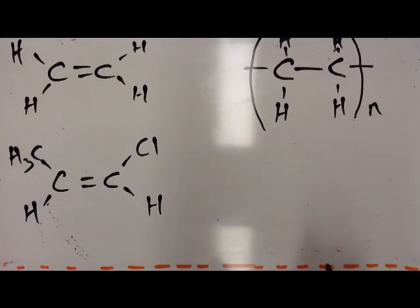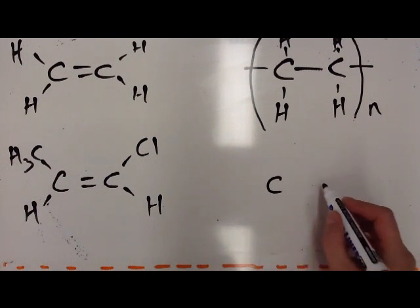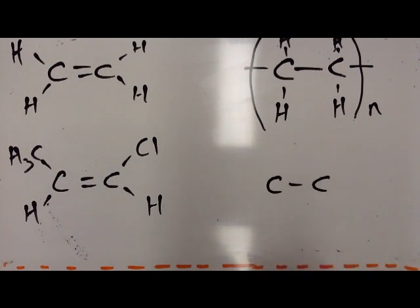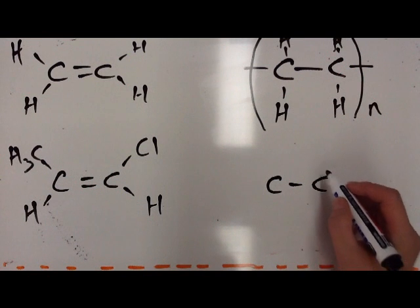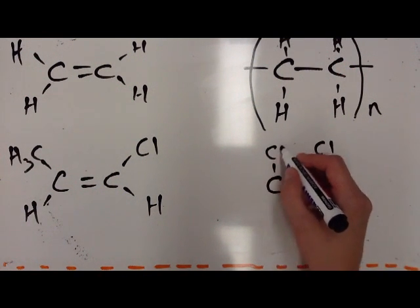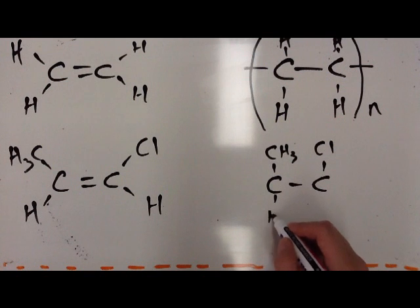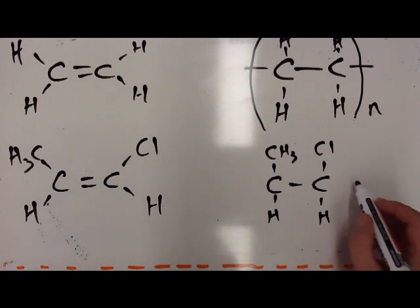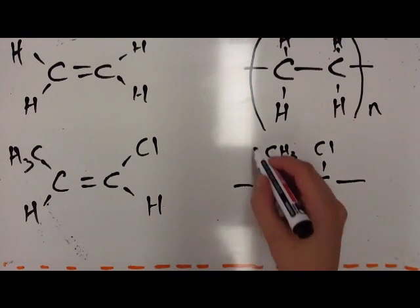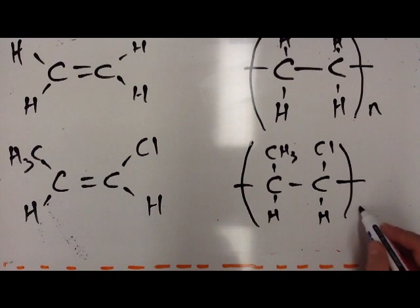We follow exactly the same procedure. Draw the two carbons, but with a single bond instead of a double bond. Draw the groups on in the same order. We do our lines either side, a big bracket and a little n.